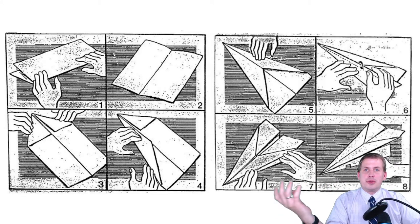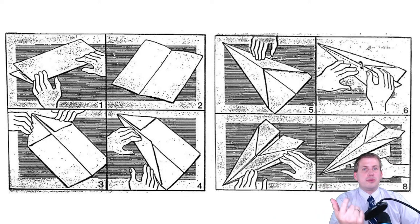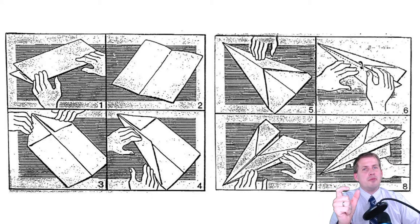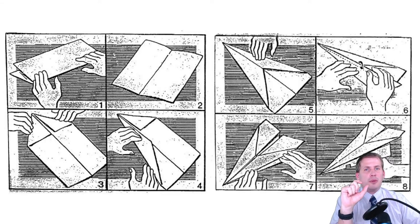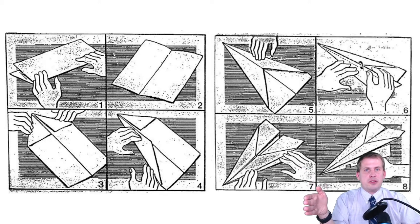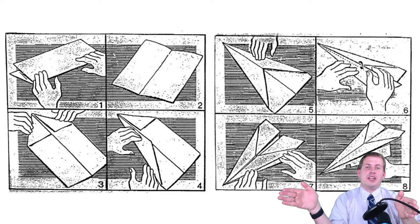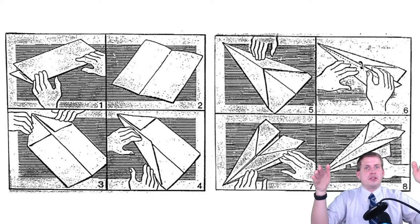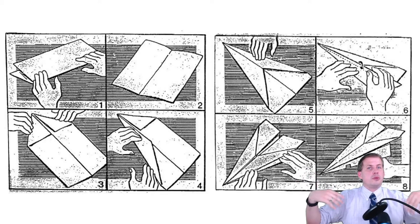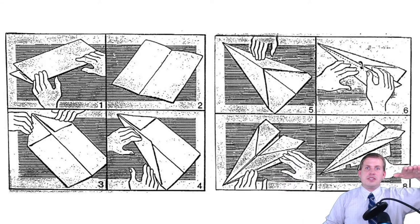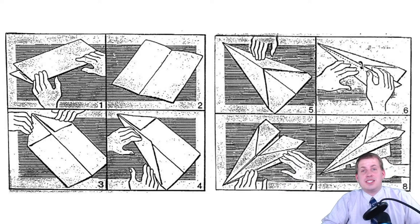You'd think the group with ten people would make a ton of airplanes and the group with two would make just a few, and that's generally true — but it's not as direct a relationship as you'd expect. If a group of two makes ten airplanes in three minutes, a group of four doesn't make twenty. You actually make a little bit less, and as group size increases the number of airplanes starts decreasing.